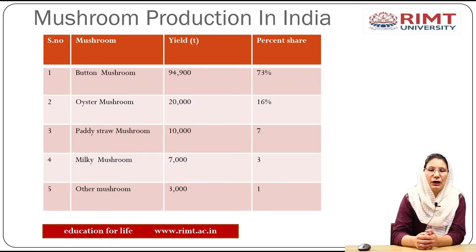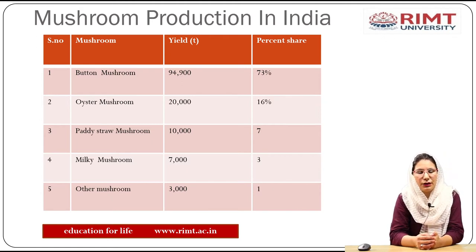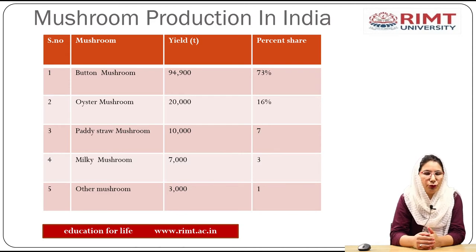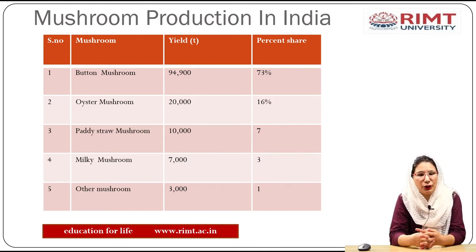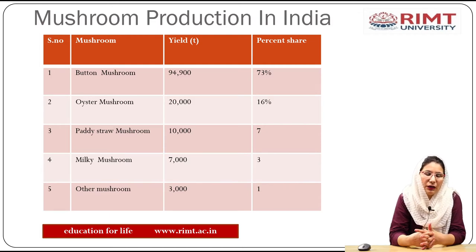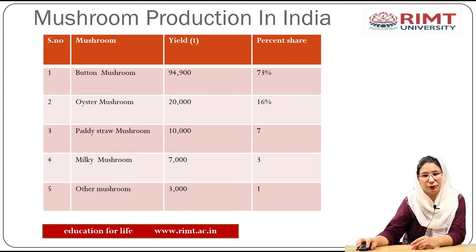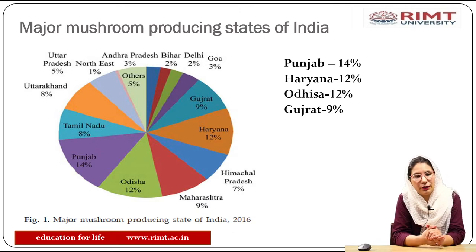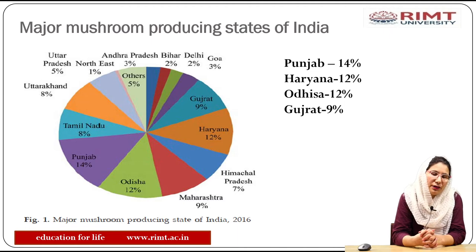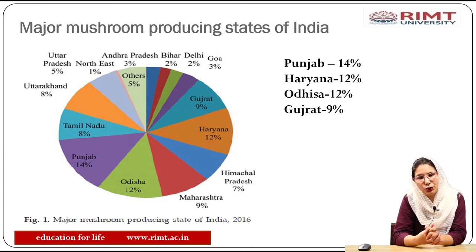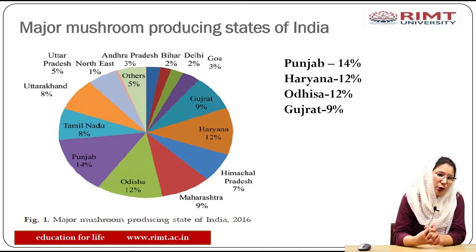Now, mushroom production in India. India is usually producing mushrooms like button mushroom, oyster mushroom, paddy straw mushroom, milky mushroom and some other mushrooms. The production is maximum in case of button mushroom with a yield of 94,900 tons, followed by oyster mushroom with 20,000 tons. The pie chart shows the mushroom producing states of India and their percentage contribution by each state. Punjab is at the top in mushroom production with 14 percent, followed by Haryana and Orissa with 12 percent, and then followed by Gujarat.